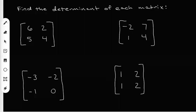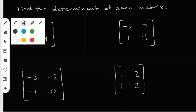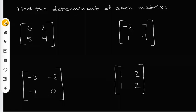For these four problems, I want to find the determinant of each matrix. The determinant is going to be a real number based on this matrix. This is a two by two matrix, which means it has two rows and two columns, with the row number always coming first.